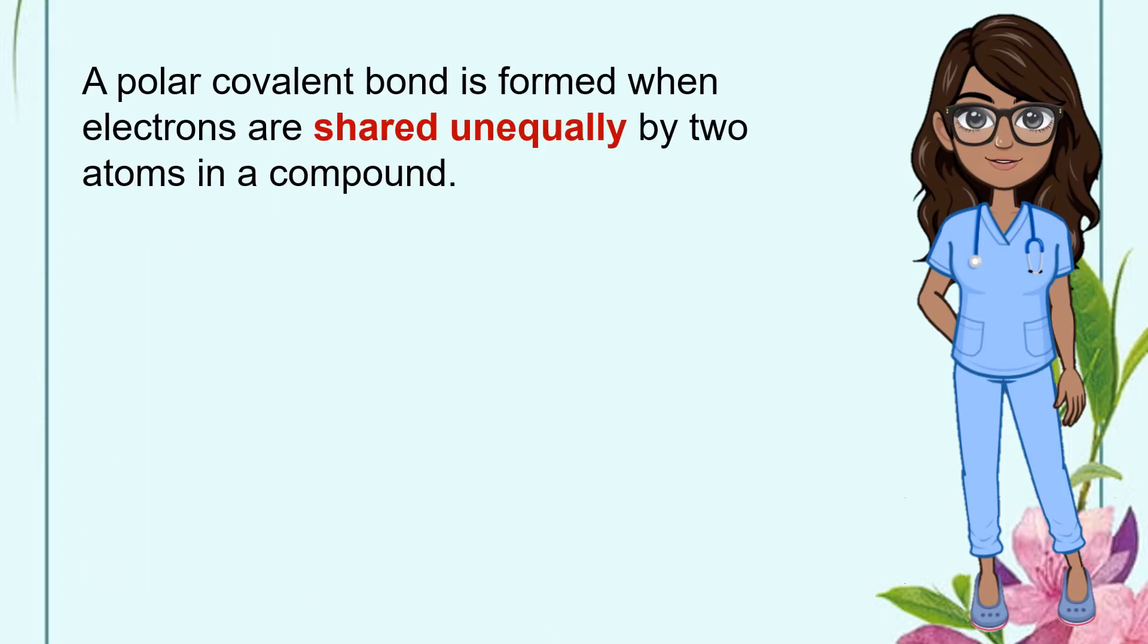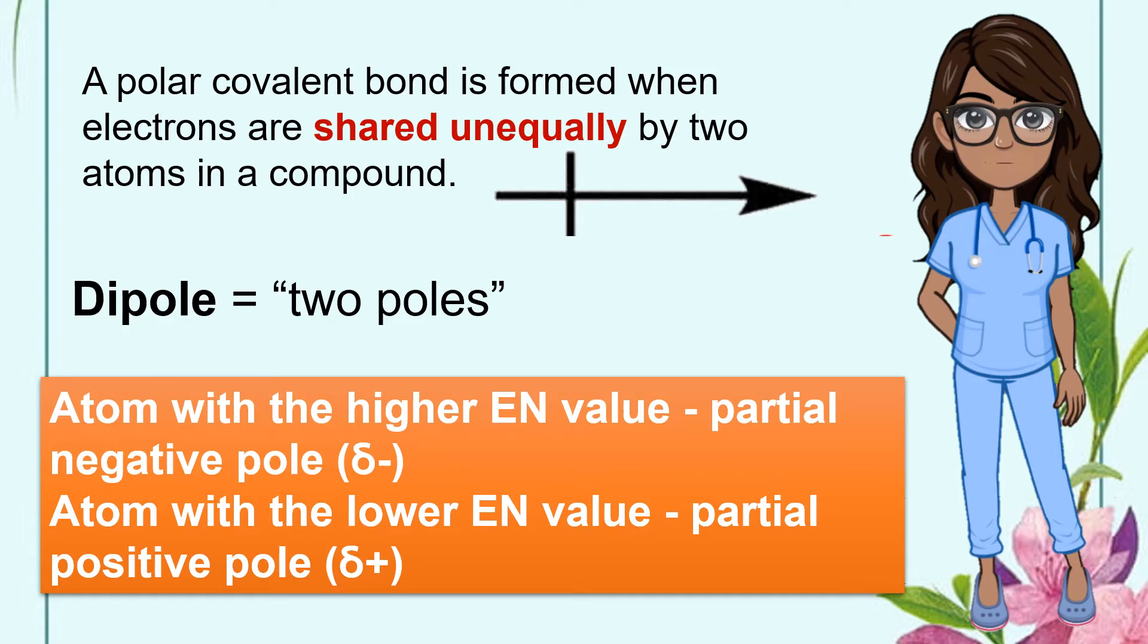A polar covalent bond is formed when electrons are shared unequally by two atoms in a compound. The bonded pair of atoms form an electric dipole represented by the symbol. Dipole means two poles which means that a molecule has one positive end and one negative end. In this type of bond, the atom with a higher electronegativity value becomes the partial negative pole, symbolized as shown, while the atom with the lower EN value becomes a partially positive.